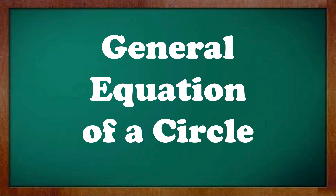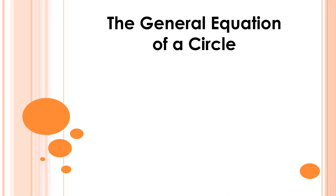Let us discuss now the general equation of a circle. The general equation of a circle is x squared plus y squared plus Dx plus Ey plus F is equal to 0, where D, E, and F are real numbers.